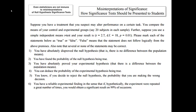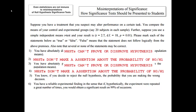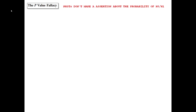Statements 1 and 3 are false because null hypothesis significance tests cannot prove or disprove hypotheses. For statements 2 and 4 it is similar — it is not possible to make an assertion about the probability of the null or the alternative hypothesis using null hypothesis significance tests. Statement 5 might sound like the type 1 error rate, but it isn't. And statement 6 is called the replication fallacy. So why isn't it possible to make statements about the probability of the null or alternative hypothesis?